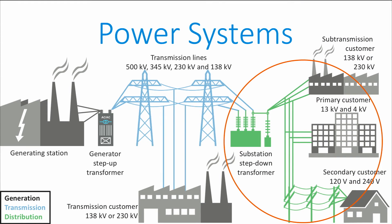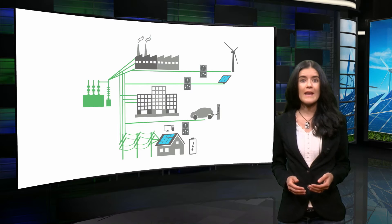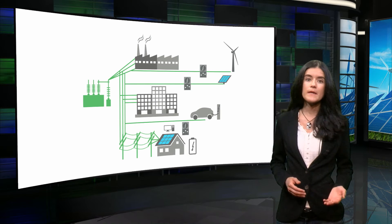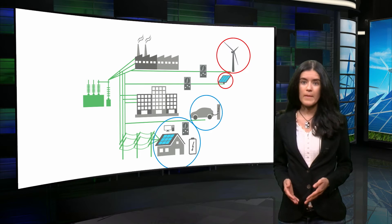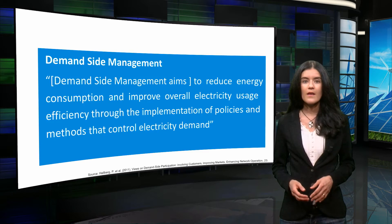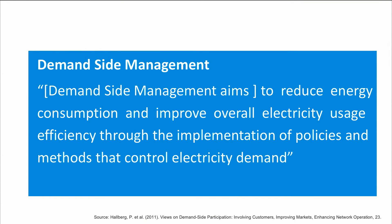The distribution system of the power system has traditionally been passive, but this is changing rapidly. The distribution system is evolving into an active network through the participation of distributed generation and storage, and also through the application of demand-side management. According to the Euroelectric Association, the aim of demand-side management is to reduce energy consumption and improve overall electricity usage efficiency through the implementation of policies and methods that control electricity demand.